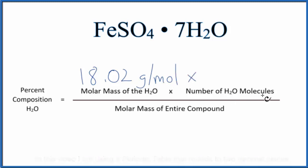We multiply that by the number of water molecules, seven water molecules. We're going to multiply that by seven, and that'll give us the molar mass of just the seven water molecules here in this compound.